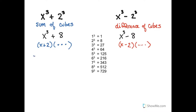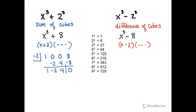If x plus 2 is a factor and I use synthetic division, I'm going to write negative 2 because I write the opposite. And x cubed plus 8 would be written 1x cubed, 0x squared, 0x, and 8. I bring down the 1 and multiply by negative 2. 0 plus negative 2 is negative 2. Negative 2 times negative 2 is 4. 0 plus 4 is 4. And 4 times negative 2 is negative 8. So the remainder is 0 just like I wanted.